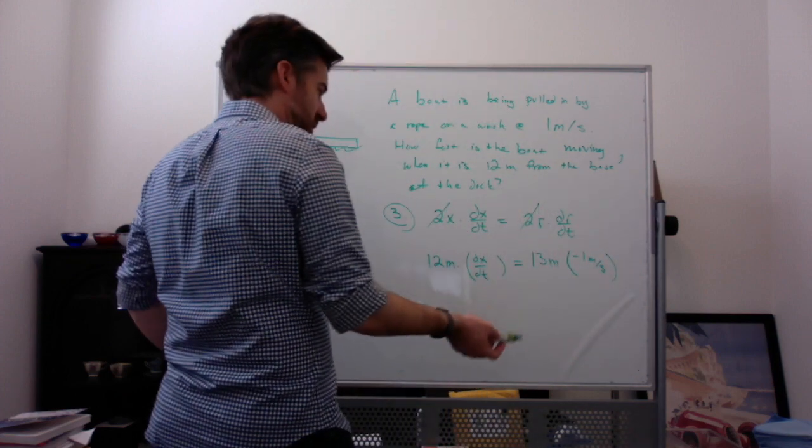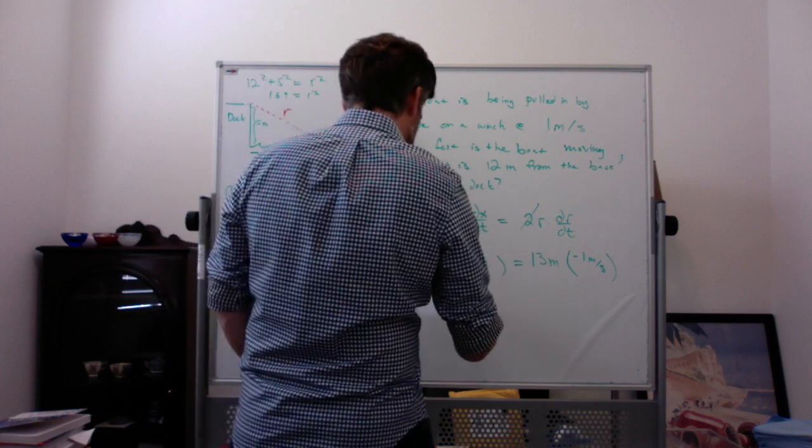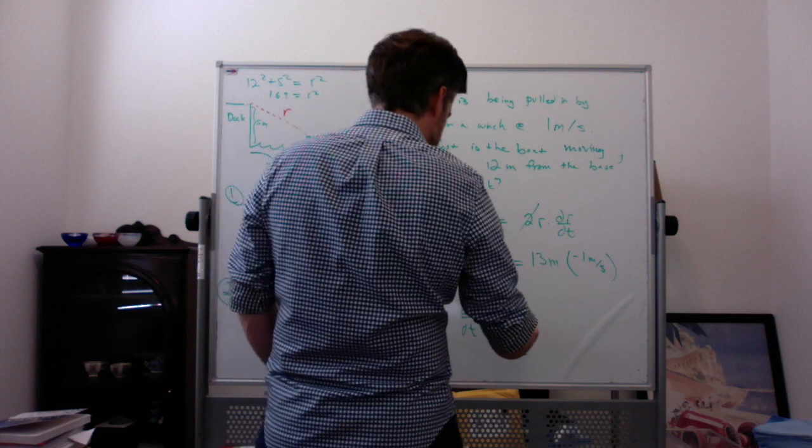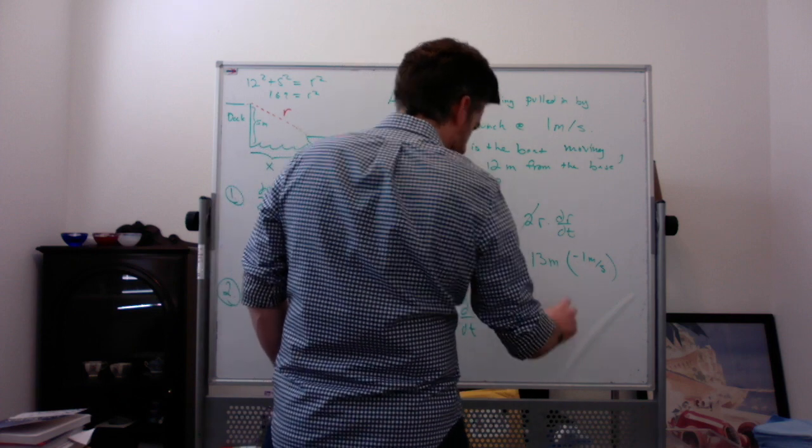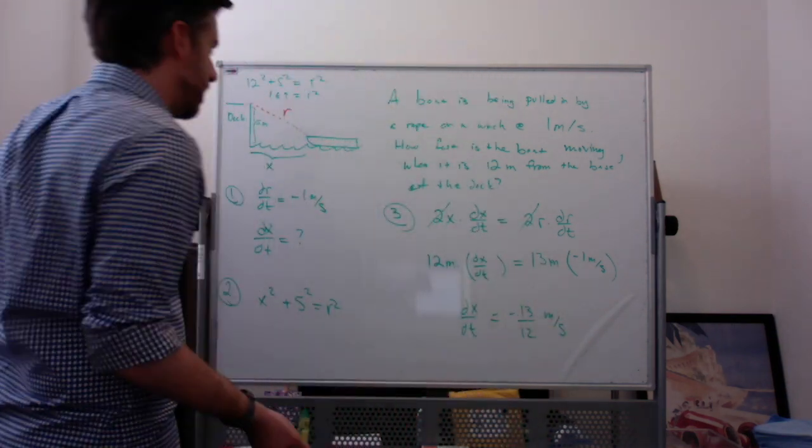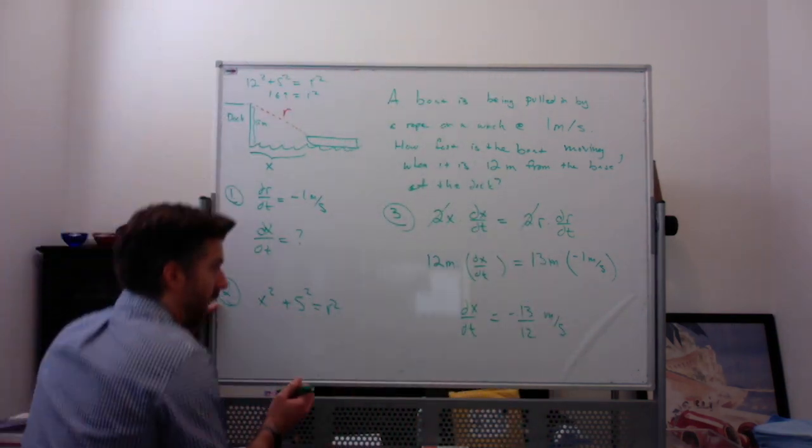So then we divide by 12 meters. The meters cancel, and you get 13 times negative 1 over 12. So you get negative 13 over 12. The meters cancel, so you're still left with just meters per second.